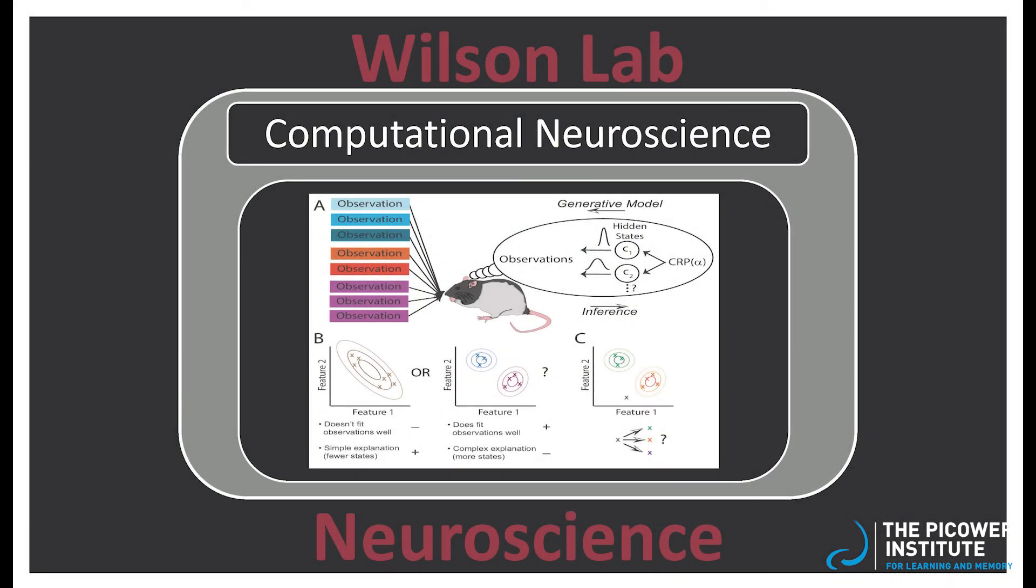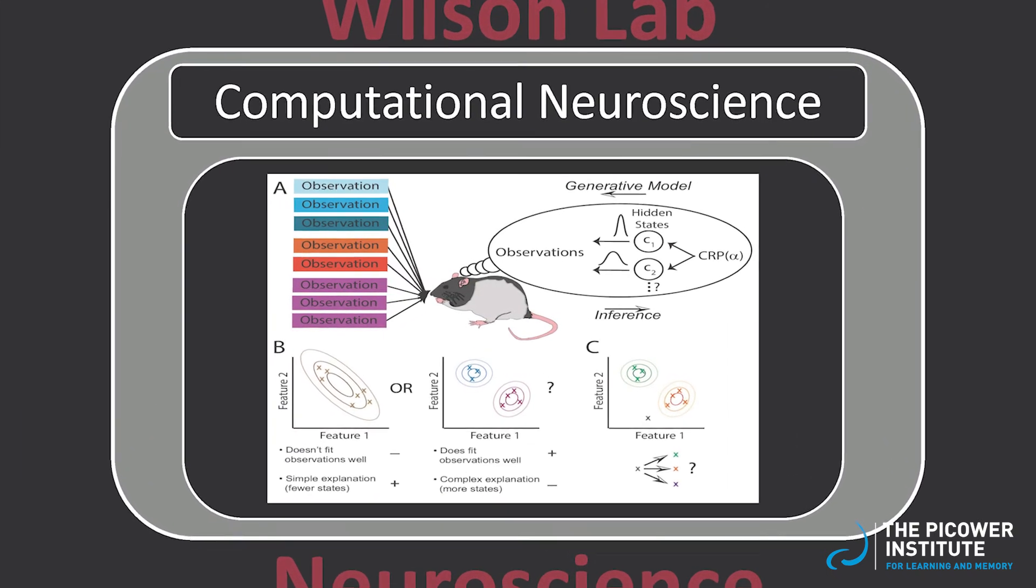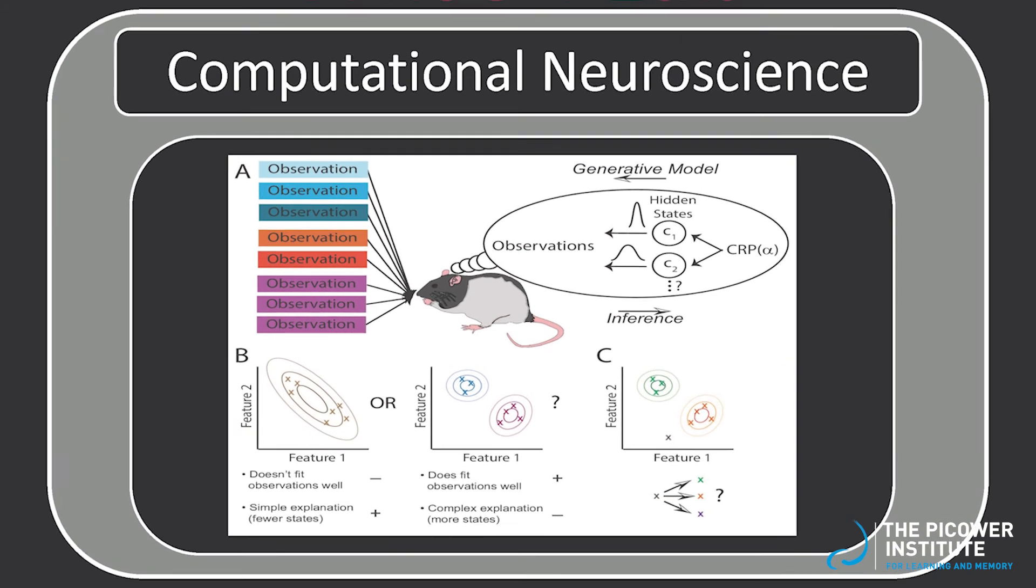After the experiments are completed, the long process of making sense of all the data begins. The complicated data sets we collect require complex computational analyses to understand them. We can also develop mathematical models that simulate the brain, allowing us to generate new hypotheses, ultimately leading to a new round of experiments that will continue to advance our scientific knowledge.